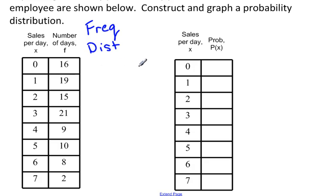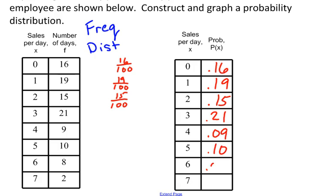So for the first one here, 16 out of 100 is the probability that he had zero sales in a particular day. So that's 0.16. There were 19 days where he had one sale, so 19 out of 100 is 0.19. And then there were 15 days where he had two sales, so the probability that I choose a day where he has two sales is 15 out of 100 or 0.15. It's going to continue to work like that until I get the entire probability distribution filled. And there is my probability distribution.